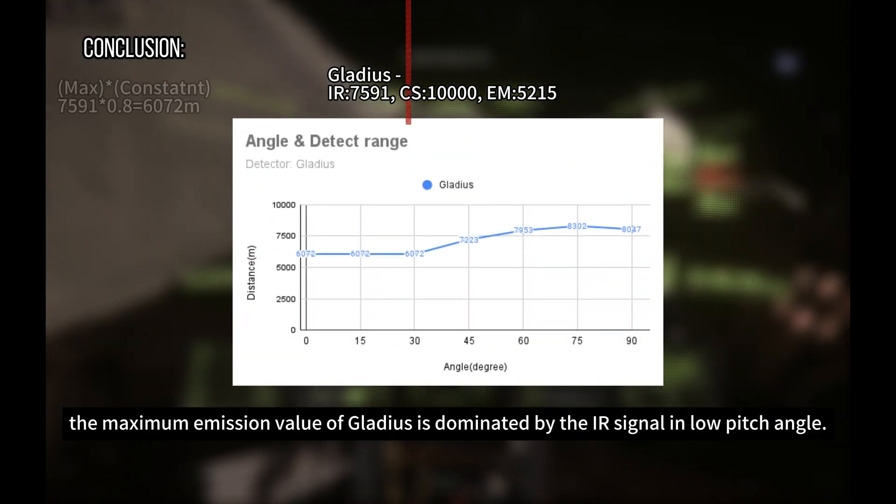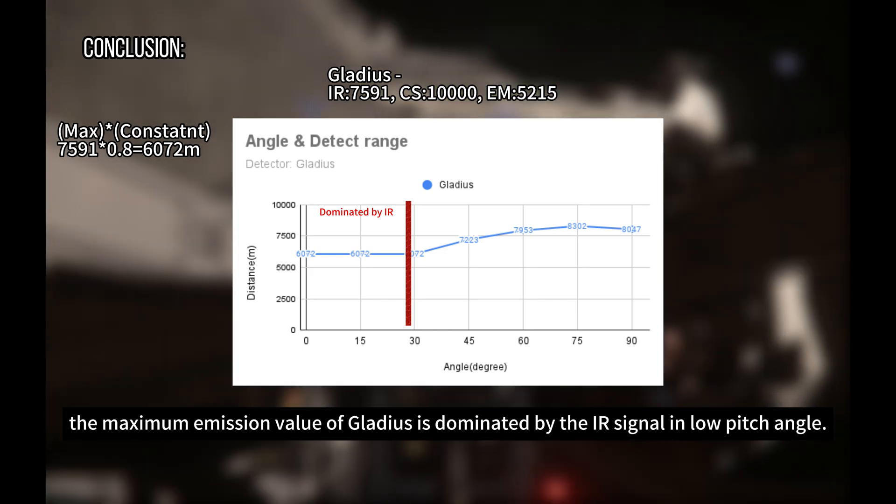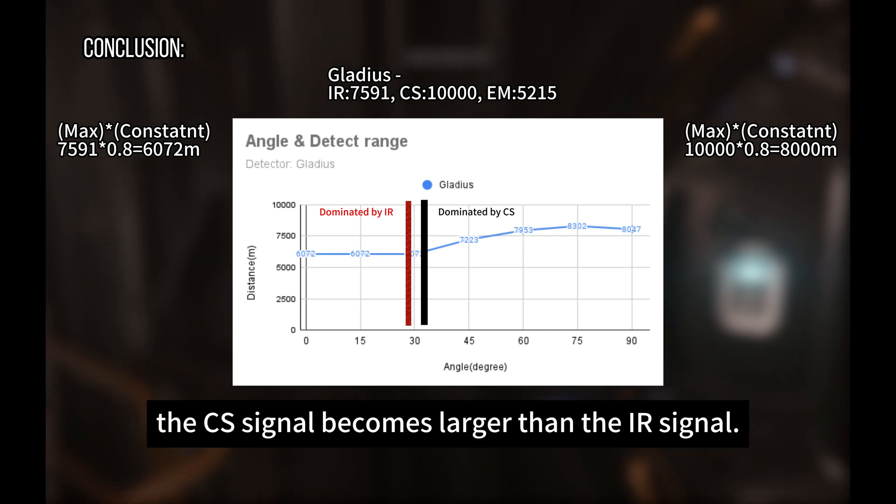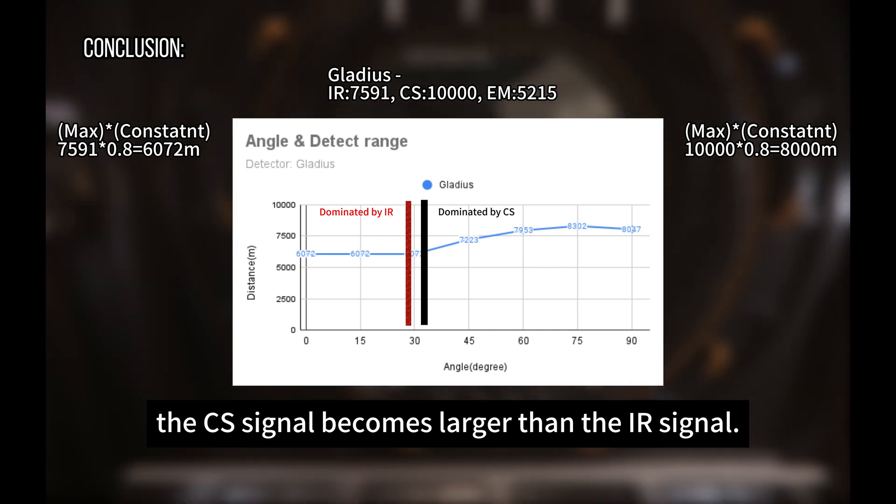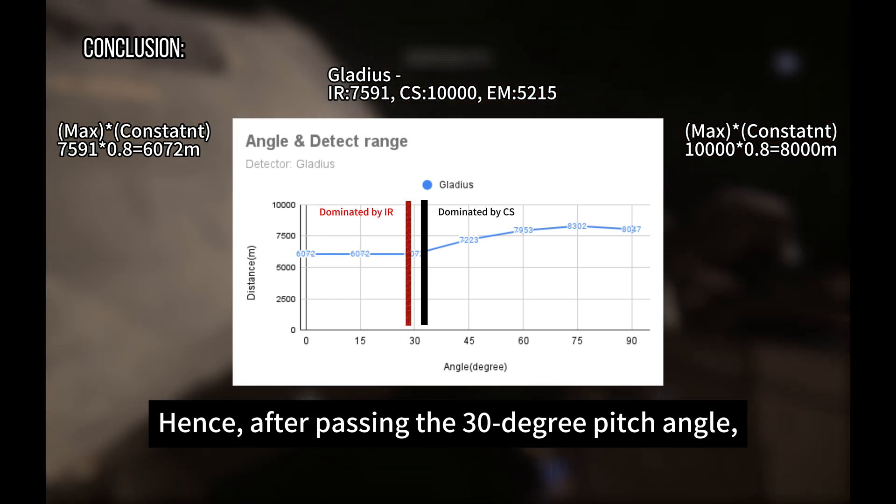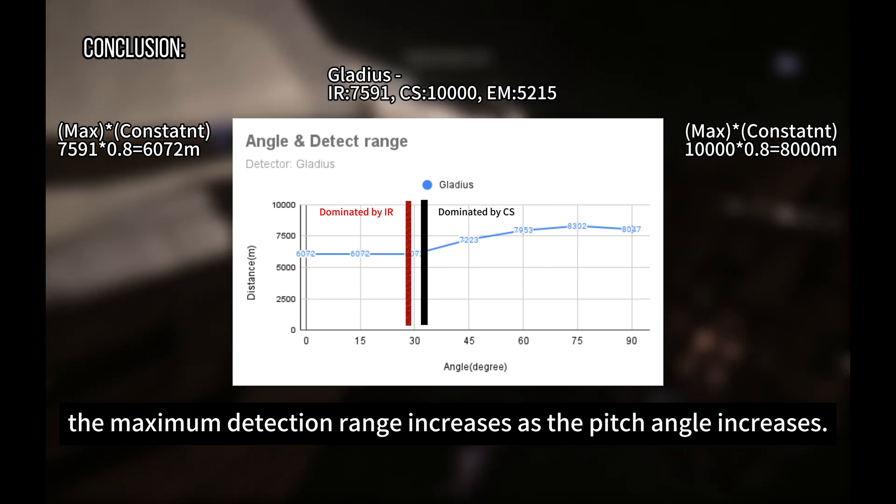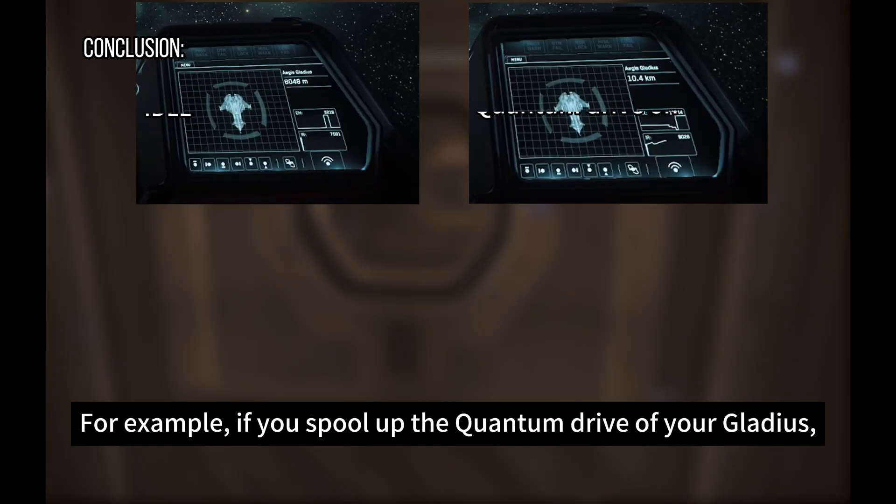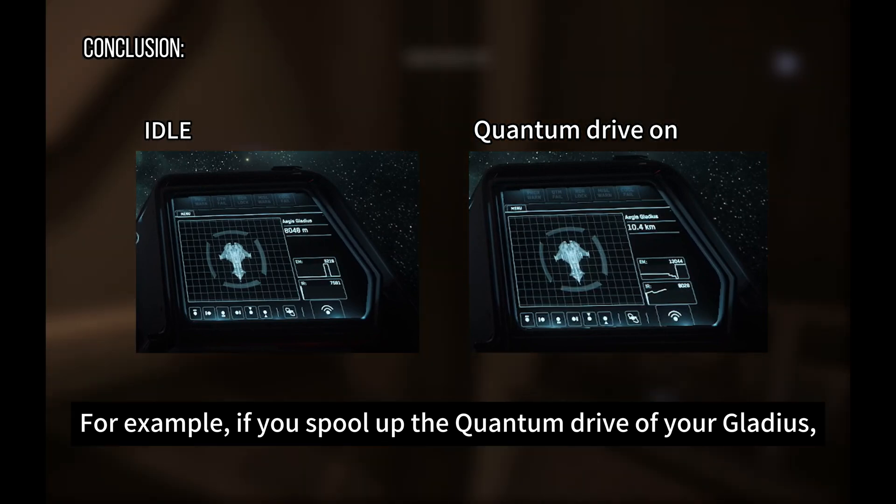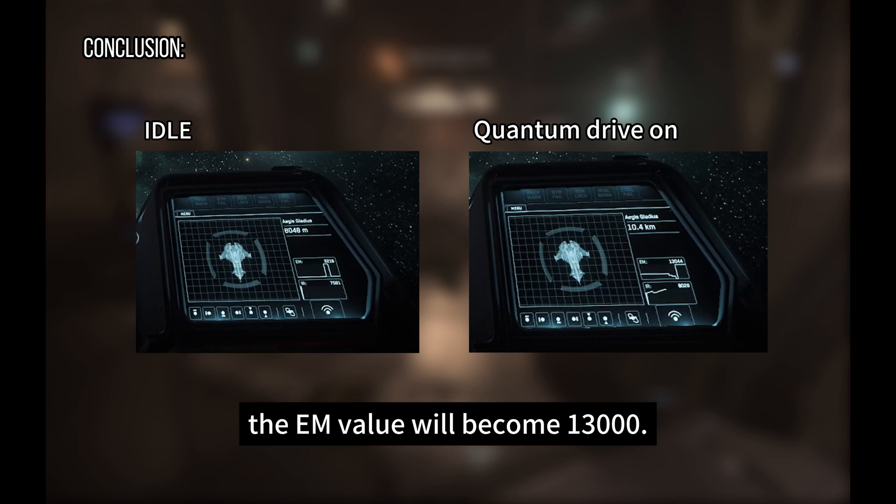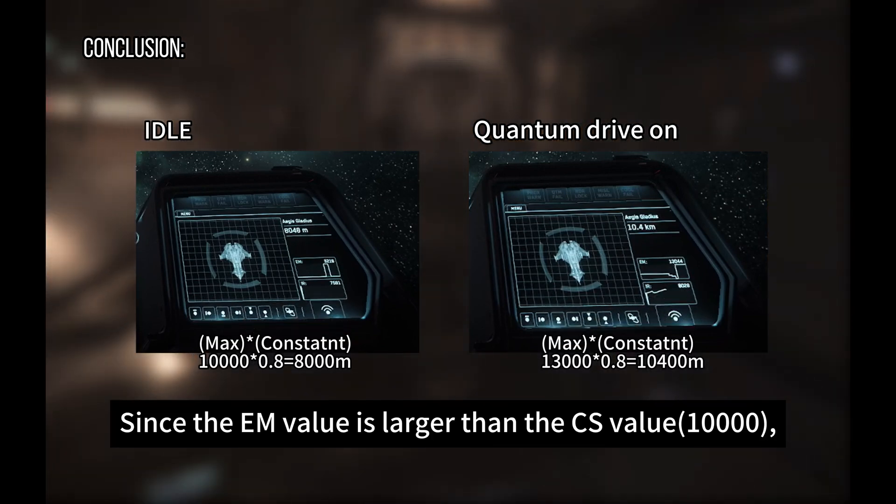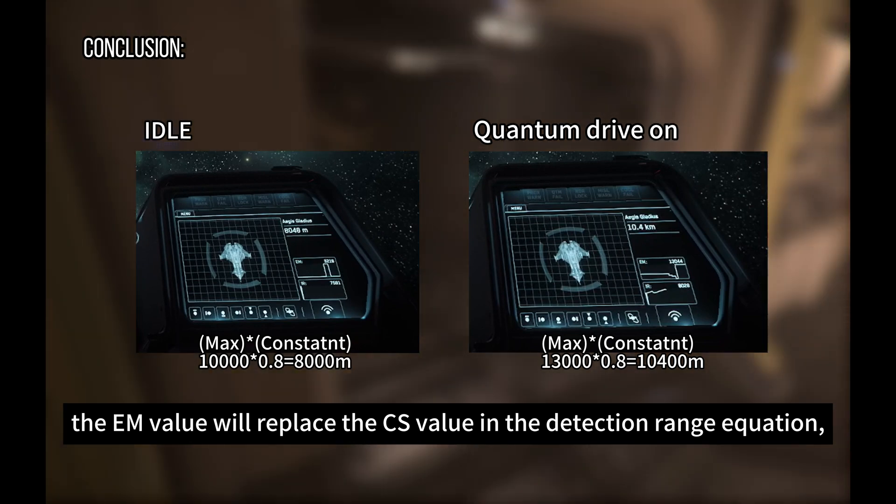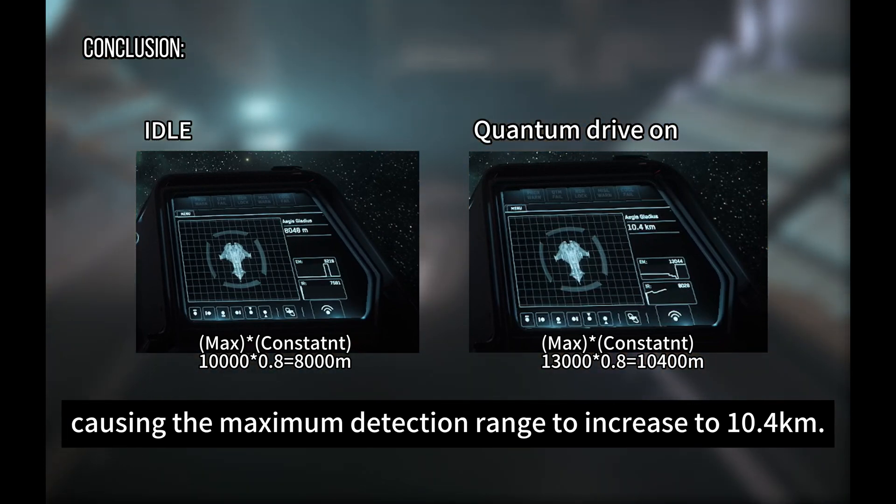Take Gladius for example. The maximum emission value of the Gladius is dominated by the IR signal in low pitch angle. However, as the pitch angle increases, the CS signal becomes larger than the IR signal. Hence, after passing the 30 degrees pitch angle, the maximum detection range increases as the pitch angle increases. This logic can also be applied to the IR signal and the EM signal. For example, if you spool up the quantum drive of your Gladius, the EM value will become 13,000. Since the EM value is larger than the CS value, the EM value will replace the CS value in the detection range equation, causing the maximum detection range to increase to 10.4 km.